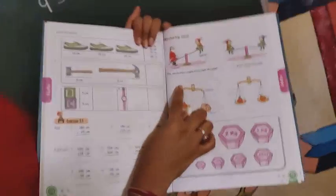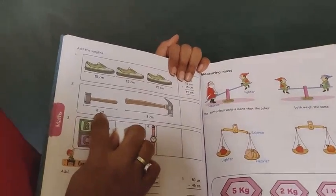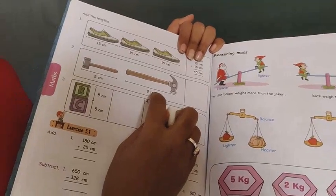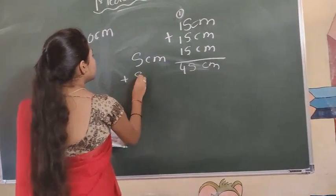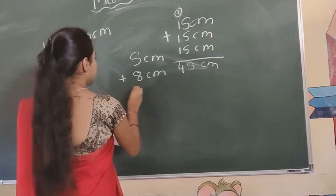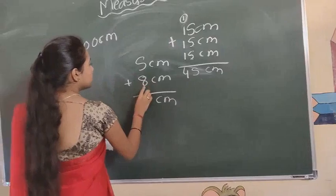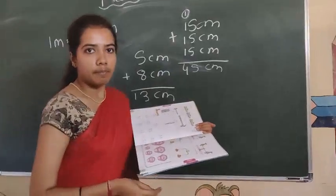Like that only. Here, there are 2 hammers. One hammer's length is 5 centimeters; the other is a big one — 8 centimeters. You have to add here: 5 centimeters plus 8 centimeters — centimeter as it is. 5 plus 8 is 13 centimeters. You have some additions to solve here.